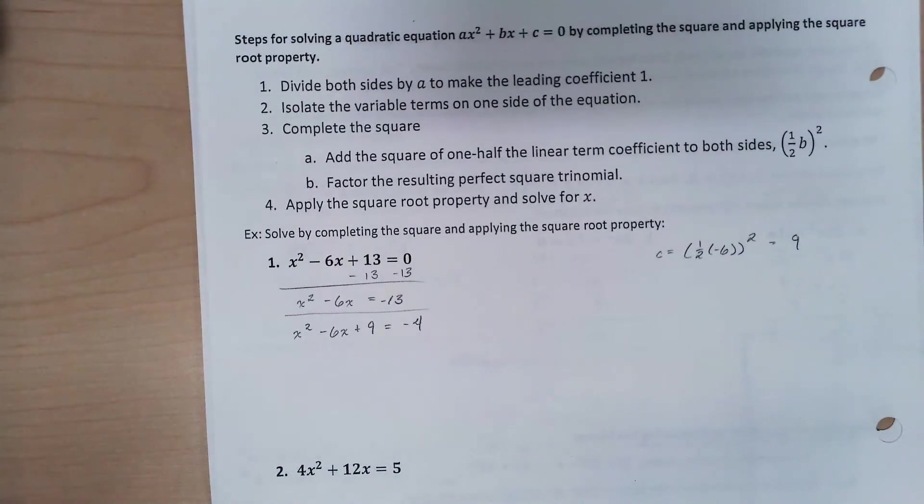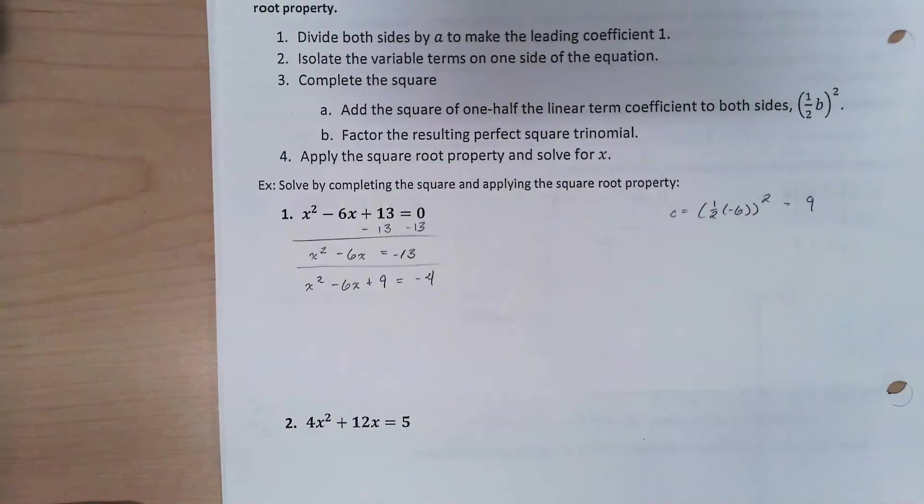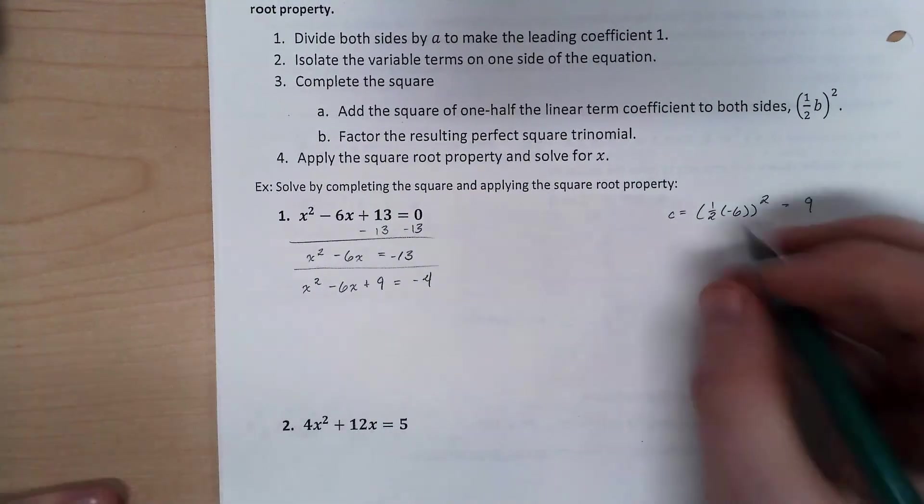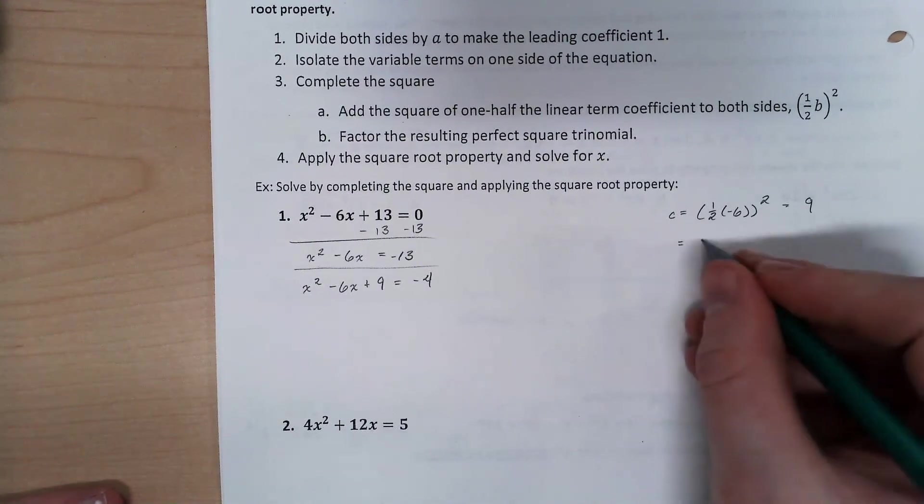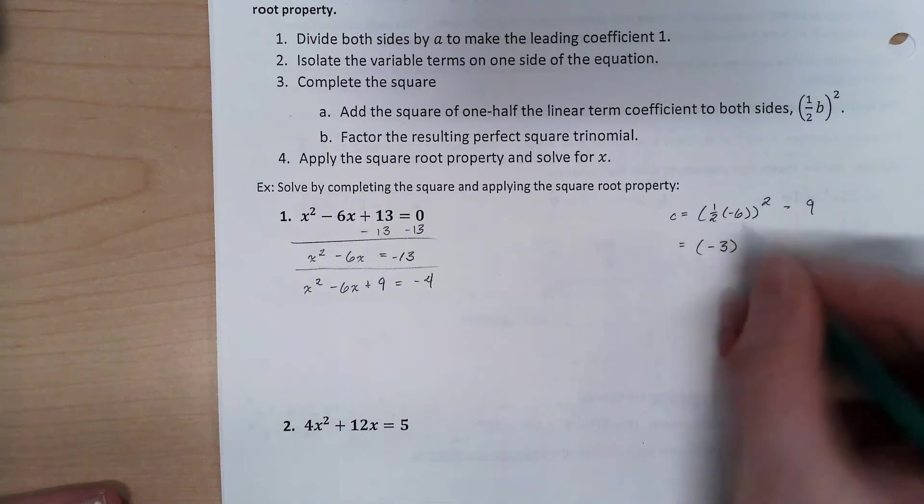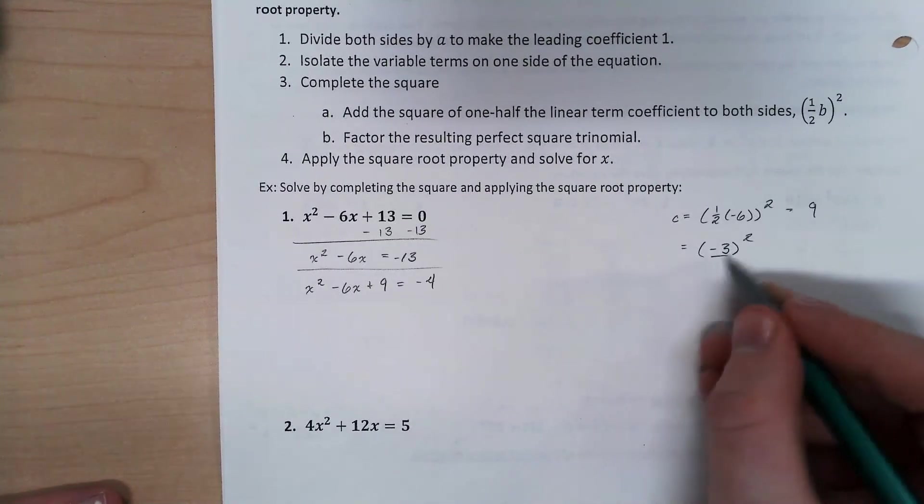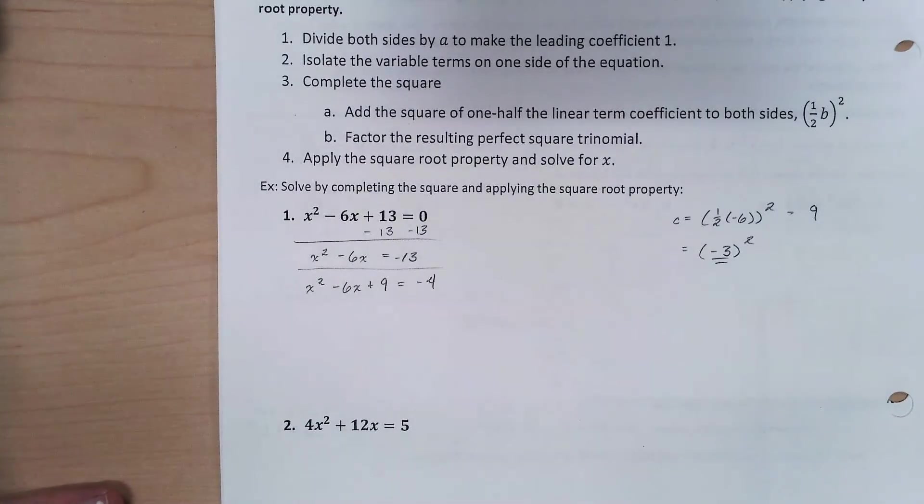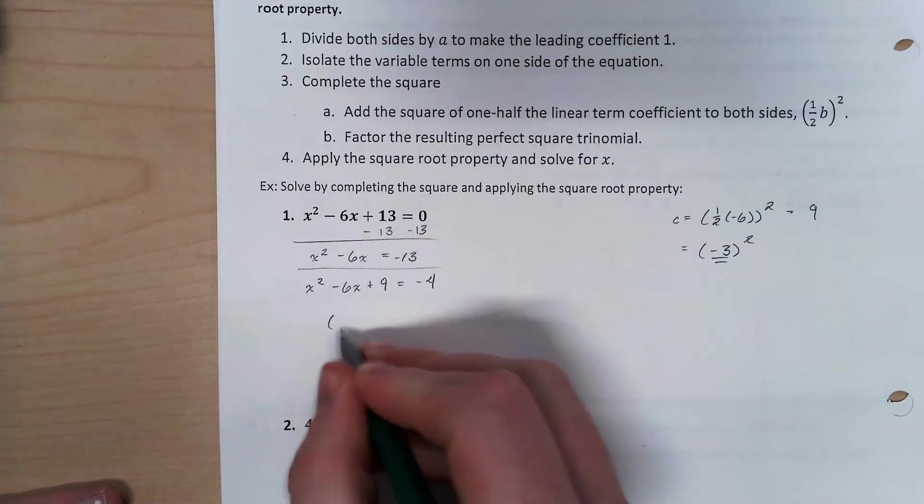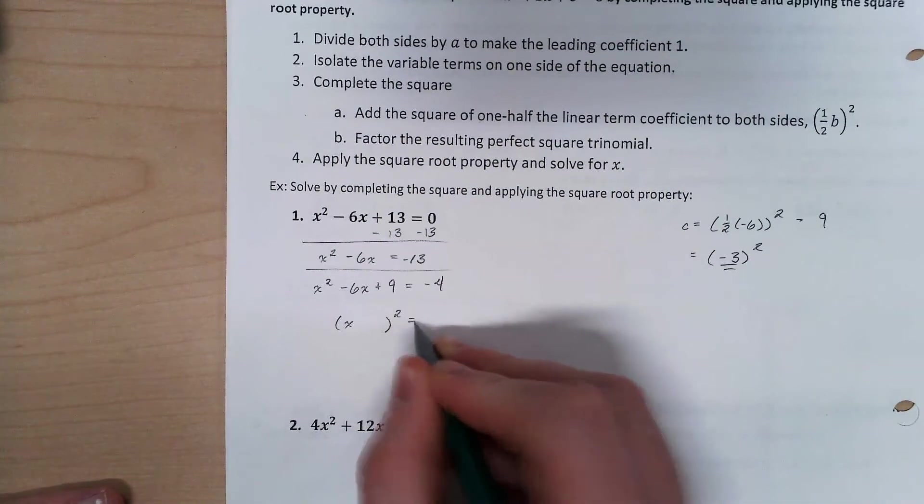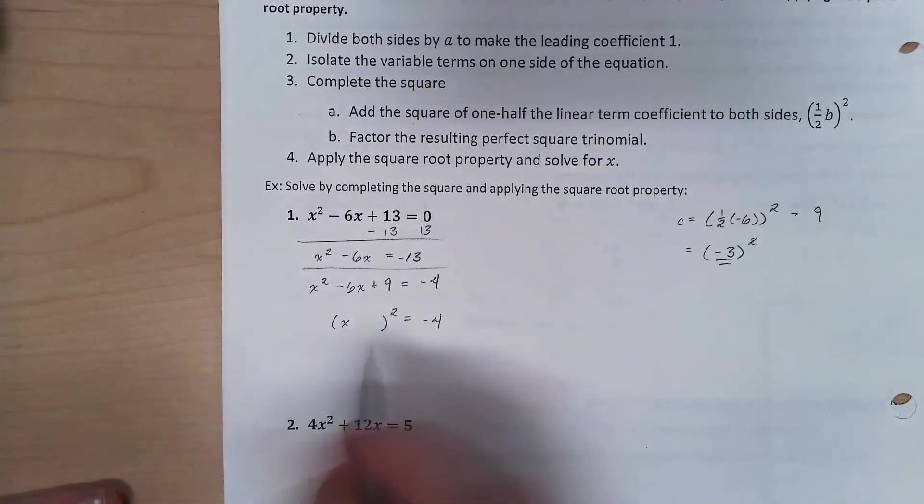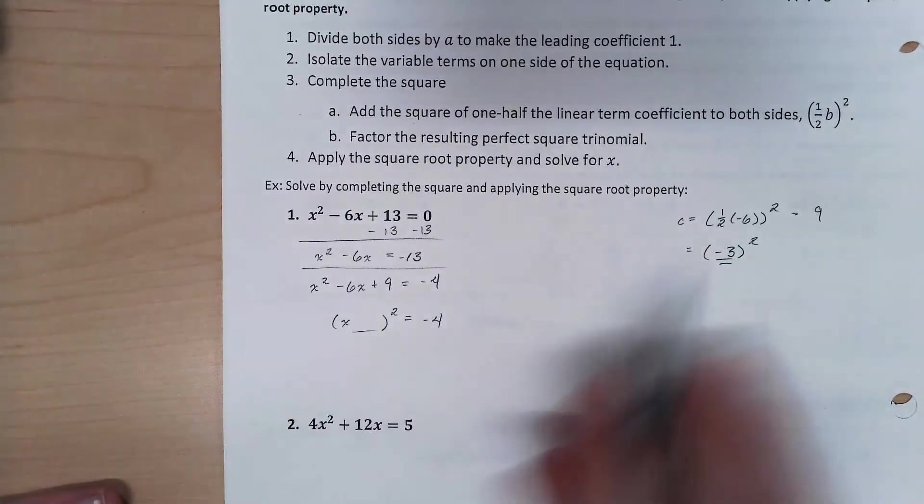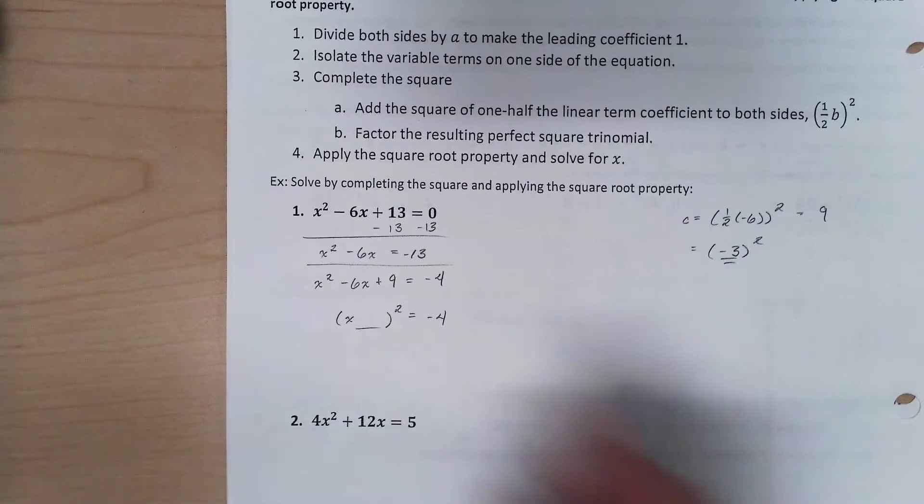So now I'm ready to factor this. When I went through and solved this, I said half of negative 6 was negative 3. This value is the one I'm going to use when I factor. On every single one of these problems, the factored version is always going to be x something squared, or x plus or minus something quantity squared. That something is always this value. It's never not that value.